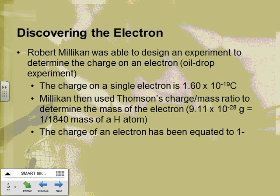Thomson was never able to figure out the actual mass of an electron. Millikan is another scientist who was able to figure out the charge on the electron. Since he knew the charge, he could figure out the mass, because Thomson had already worked out the charge-to-mass ratio. Millikan figured out the charge on one electron is 1.6 times 10 to the negative 19th Coulombs.